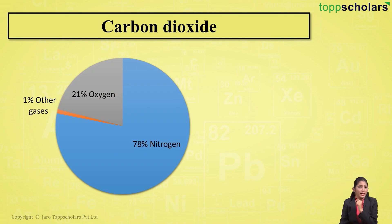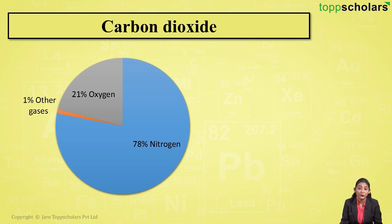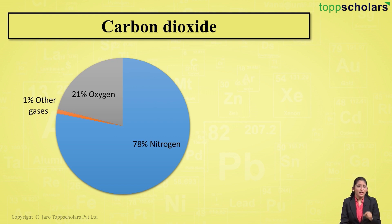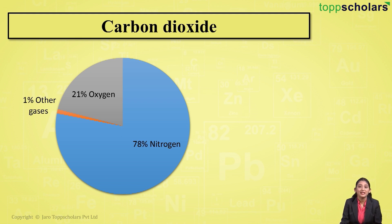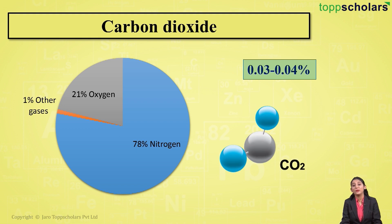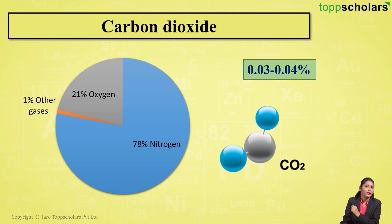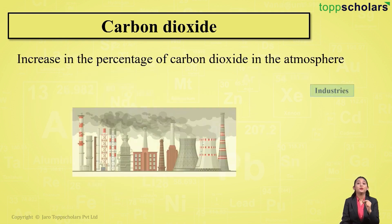If you look at the composition of air, air consists of about 78 percent nitrogen, 21 percent oxygen, and 1 percent of other gases. Now out of this 1 percent, the proportion of carbon dioxide present in the air is about 0.03 to 0.04 percent.